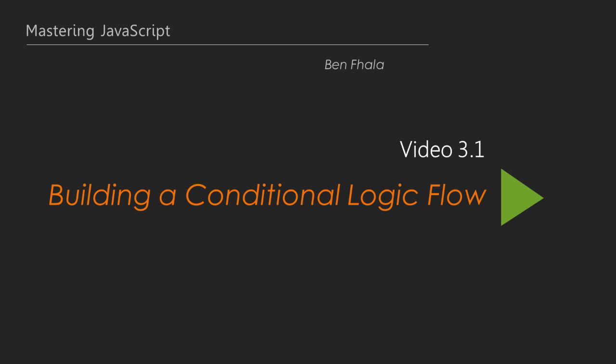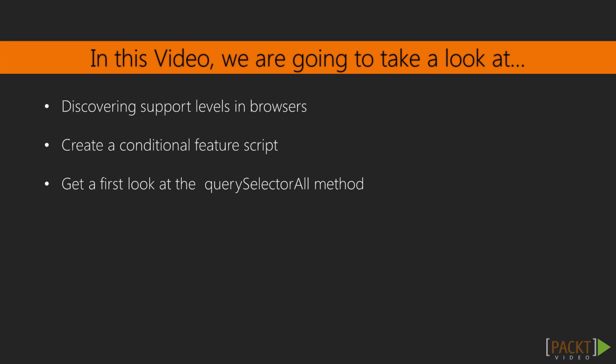So what are we going to do in this lecture? In this lecture, we're going to build that conditional logic flow that will enable us to basically create two cases — one for supported browsers. And we're going to look at how do we discover if a feature is available and supported or not. Then we'll create that conditional feature script, enabling us to have one version where we use the built-in features, while the other will load something externally.